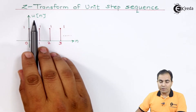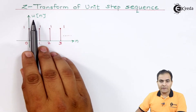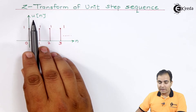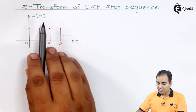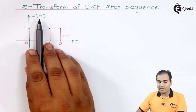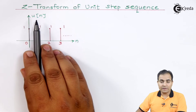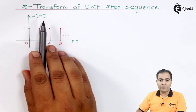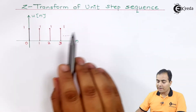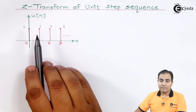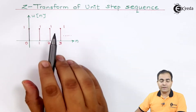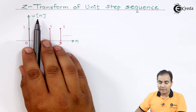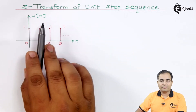The step input is always represented by u. If the graph is in the time domain, then of course I will represent it by u(t). But Z-transform is completely based on discrete sequence or discrete samples, which is why I have written u(n).